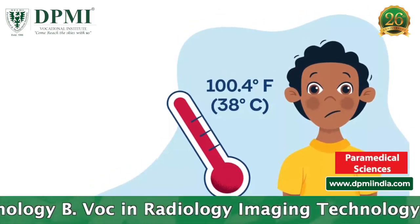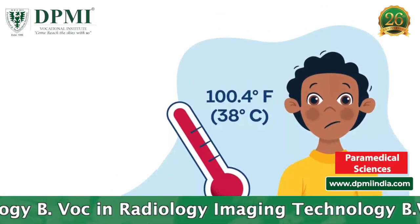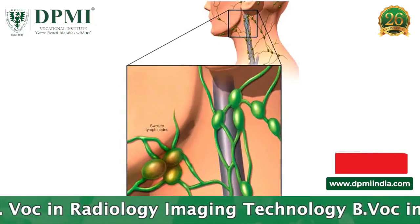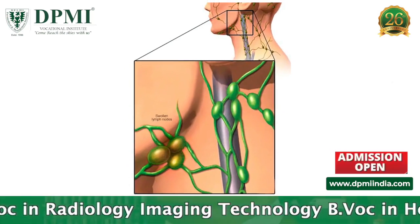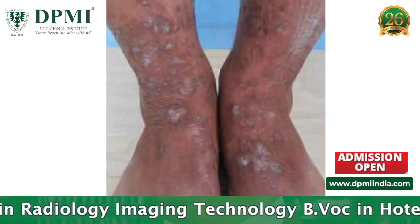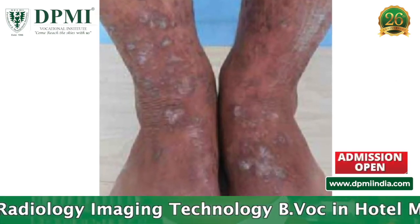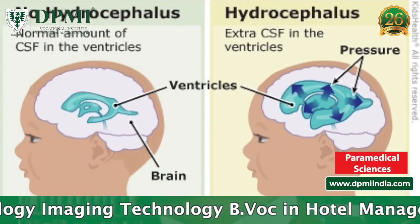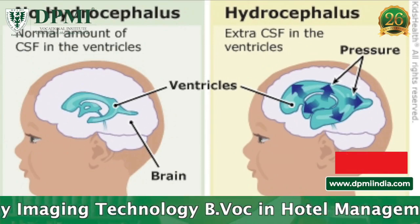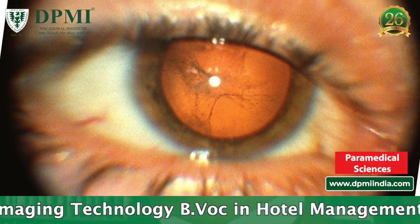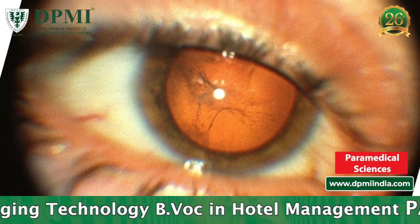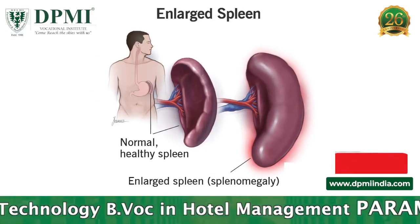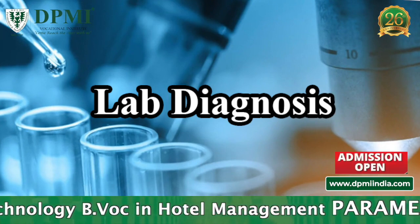Symptoms involve fever, headache, swollen lymph nodes, skin rashes, and muscle aches. In the fetus, hydrocephalus, severe eye pain, and enlarged liver or spleen are seen.